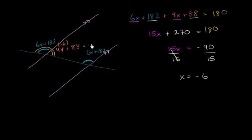Negative 54 plus 88 is—let's see, 88 minus 54 gives us 34 degrees. So this orange angle is 34 degrees.